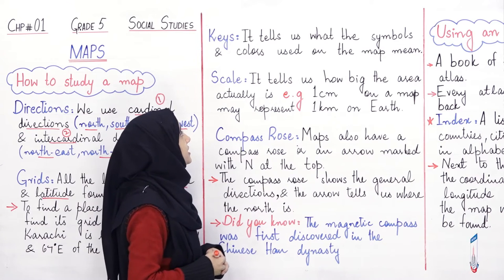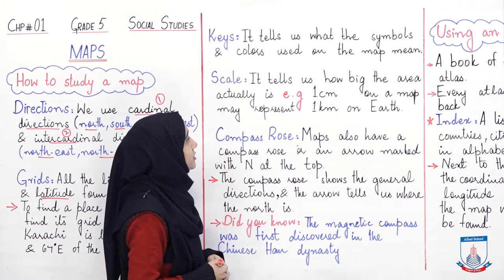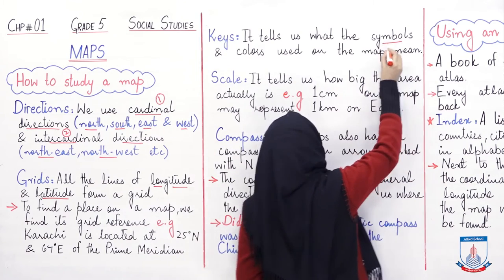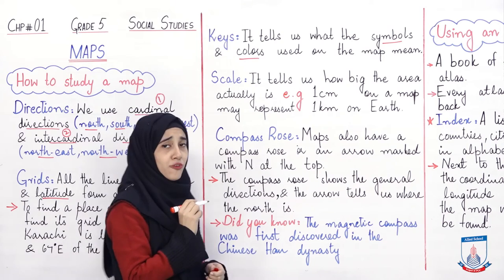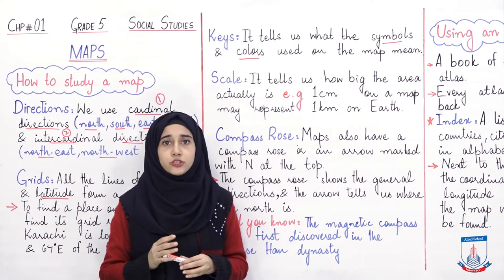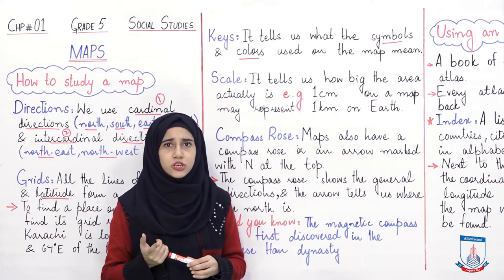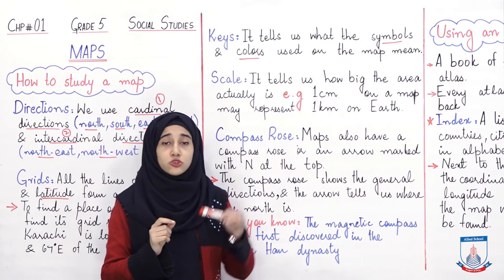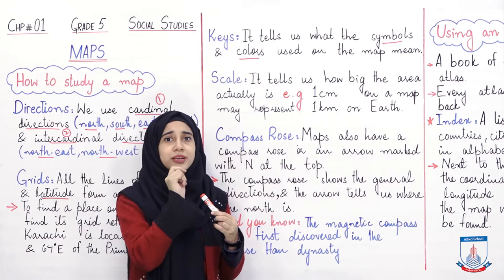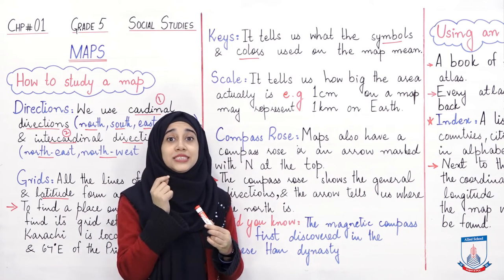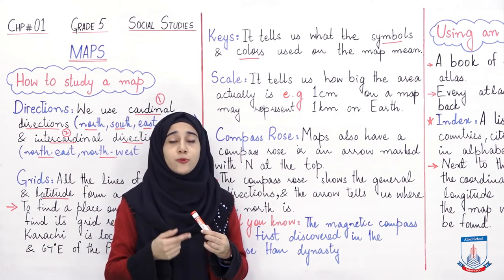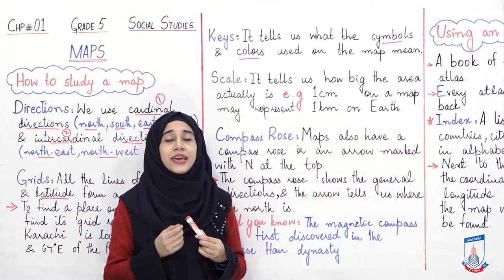Now let's talk about keys. It tells us what the symbols and colors used on the map mean. Toh ek key hume kya bataati hai? Yeh hume bataati hai ke map par joh symbols bane hue hote hai aur joh different colors shown hote hai, woh kya darshate hai. For example, ek map hai jis peh land aur river shown hai. Land ke liye brown color use hua hai aur river ke liye blue. Toh side per likha hoga ke brown color land ke liye hai aur blue color river, seas ya water ko show kerta hai. That is key — woh aapko samjha raha hai ke map pe joh colors use hue hai woh kya symbolize kerti hai.